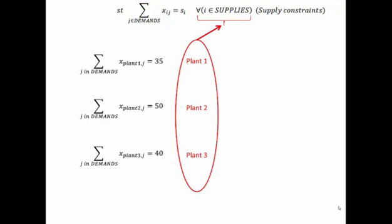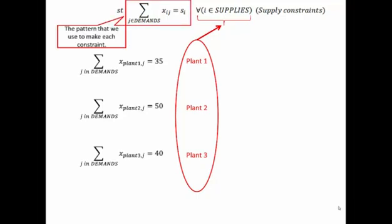We can write these in a more condensed form where we say we have one of these constraints for each one of our supplies. The pattern used to make each constraint is: sum over all the demands of xij, where every time we make a constraint we replace that i with one of our supply nodes — first plant one, then plant two, and then finally plant three.